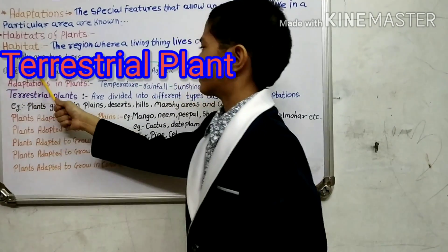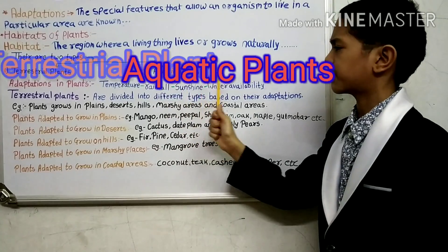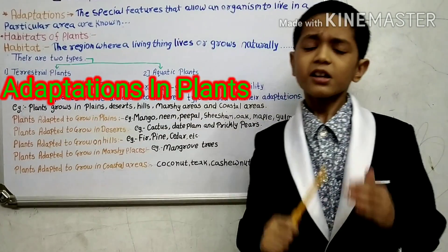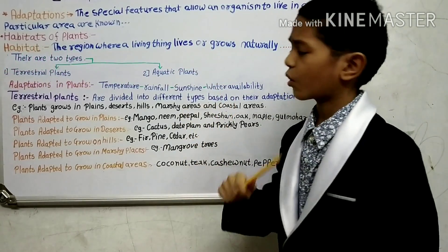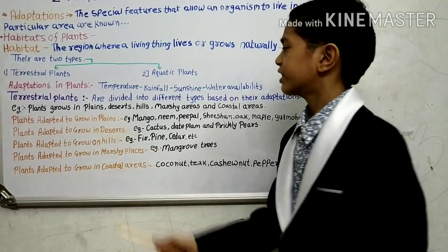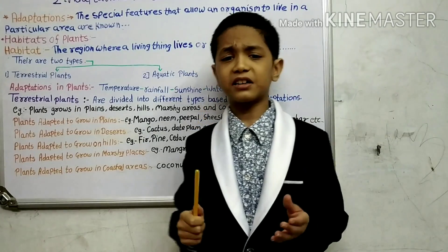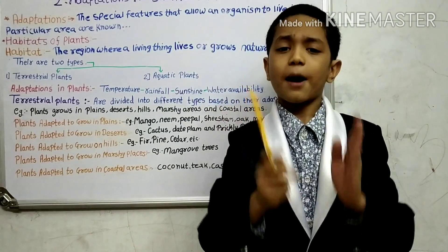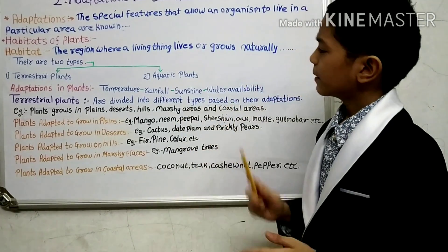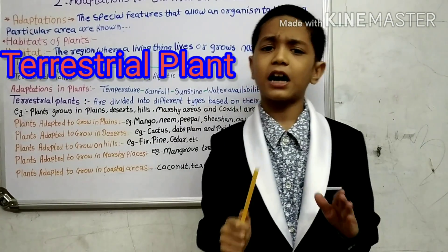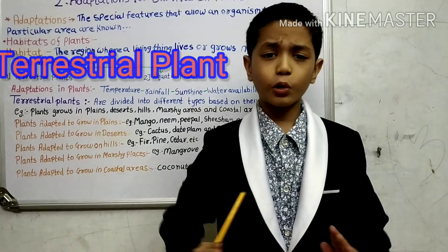A plant adapts itself according to the climatic conditions. The temperature of the place, the amount of rainfall, sunlight received, and water availability are some of the factors that influence the adaptation developed by the plant. Terrestrial plants are those plants which grow on land.